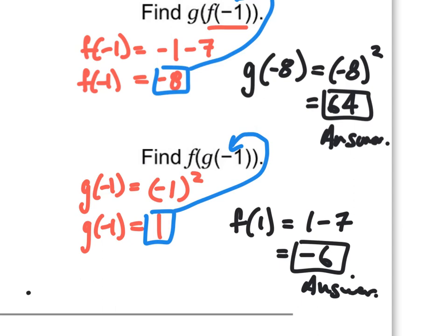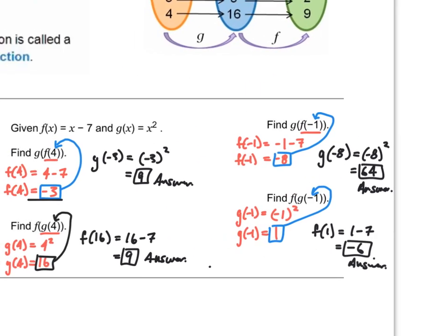We evaluate the inside function first, and then plug that y value into the other function and evaluate. That's all we're doing in all these examples — evaluate the inside function first, take that new y value, and plug it into the outside function.